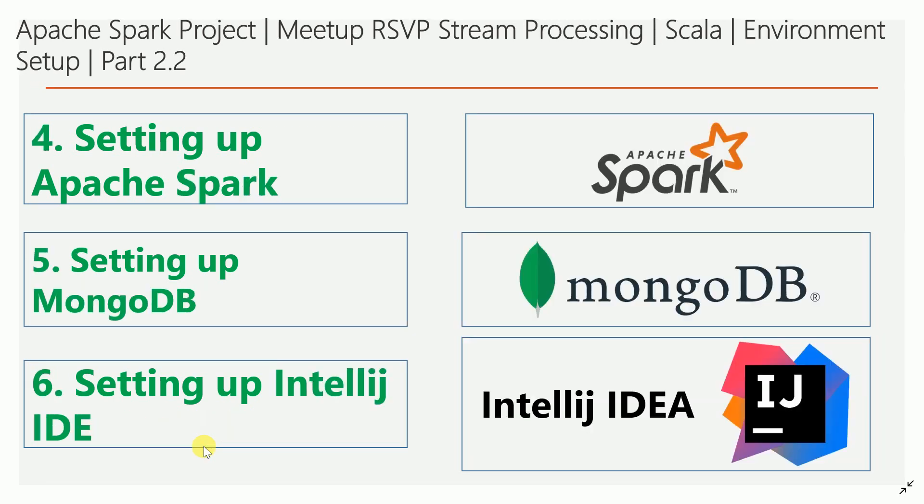The fourth thing is setting up Apache Spark, and the fifth is setting up MongoDB, because we are going to store raw data into a MongoDB NoSQL database. I will walk you through how to set up MongoDB in this video. I am also using an SBT-based Scala project to build Apache Structured Streaming. I am using IntelliJ IDE — I prepared another video for that setup, and I will add those details in my description.